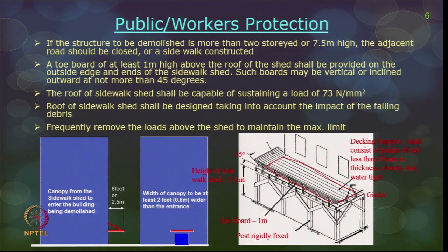The toe board should face outward at not more than 45 degrees to catch falling debris. The roof of the sidewalk shed must be strong enough to sustain a load of at least 73 Newton per mm², designed to account for the impact of falling debris. The decking should have closed panels of not less than 50 mm thickness and must be watertight. Whenever debris falls onto the sidewalk shed frequently, the load must be removed to maintain the maximum permissible load limit.